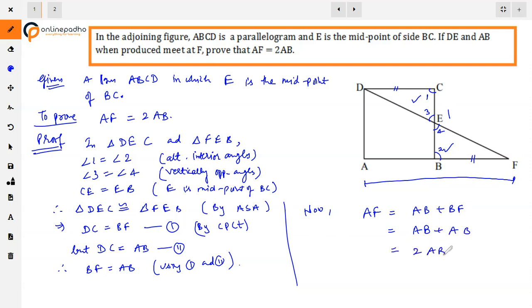Now we have proved BF equals AB. So AF, which is AB plus BF, equals AB plus AB. Hence, EF is equal to 2AB.